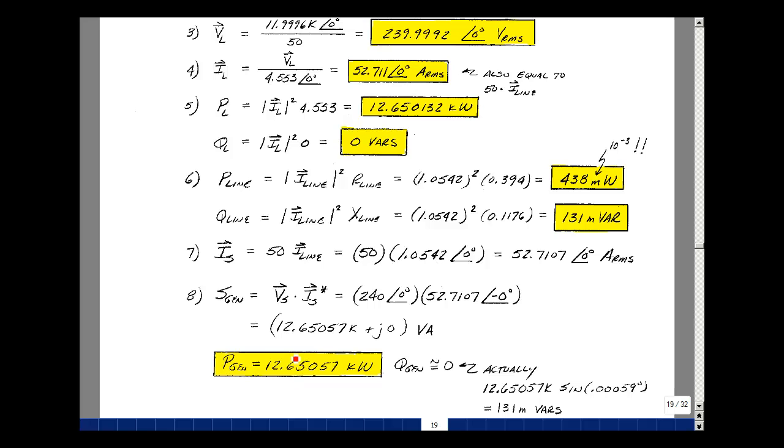The product of those to putting that in rectangular form is 12.65057k plus J0, and that's volt amperes. And again, our power generated would be in watts, and it's 12.65057k. The reactive power is essentially zero, but there was a small angle.